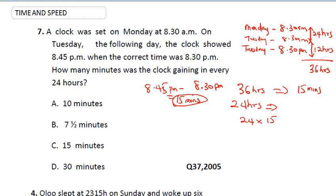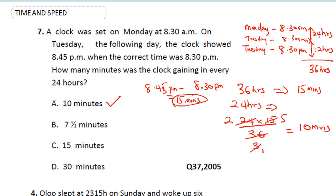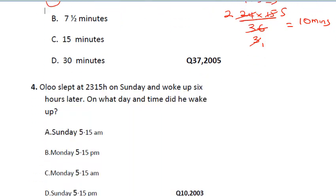In 36 hours the clock made an error of 15 minutes, so in 24 hours the clock made an error of 24 times 15 divided by 36. 12 divides into 24 giving 2, and into 36 giving 3. So we have 2 times 5 which equals 10 minutes. The correct answer is A.